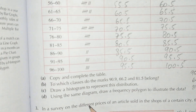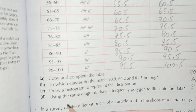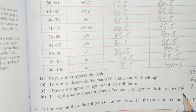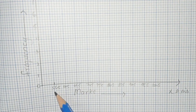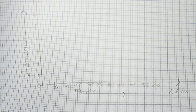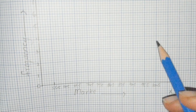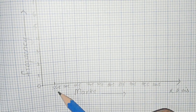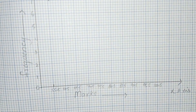In part (c), we draw the histogram to represent this distribution, and in part (d) we draw the frequency polygon on the same diagram. I mark the class intervals using lower and upper class boundaries along the x-axis, from 55.5 to 60.5 onwards. The frequency of the first class, 55.5 to 60.5, is seven, so we draw that bar.